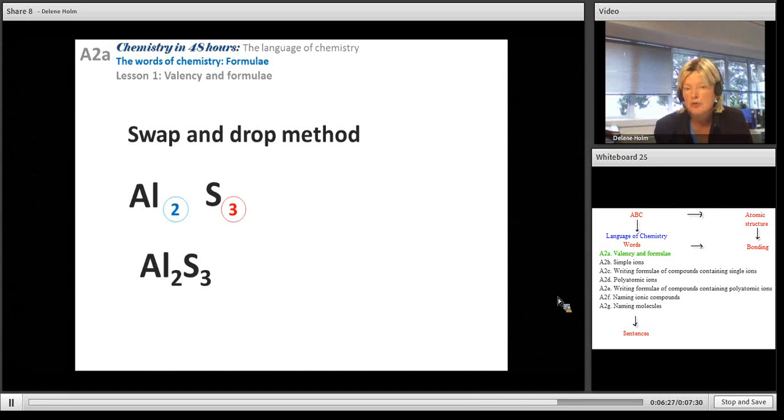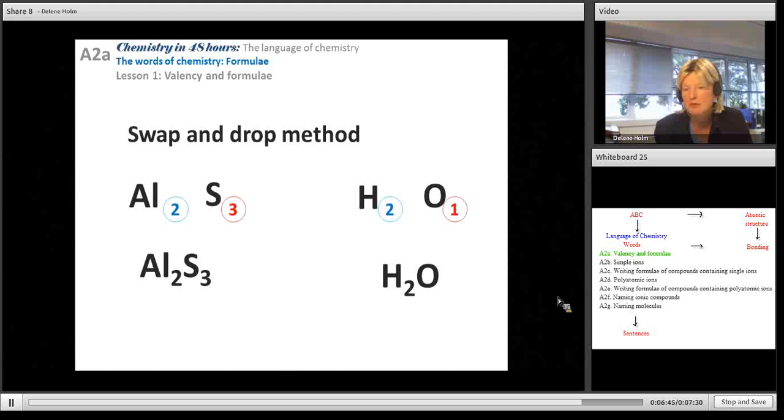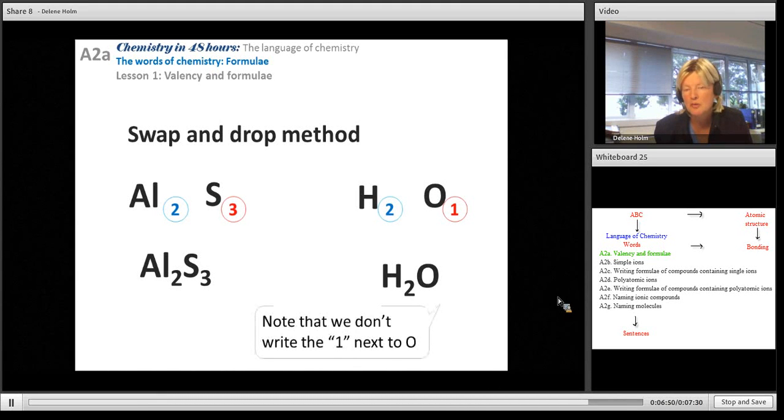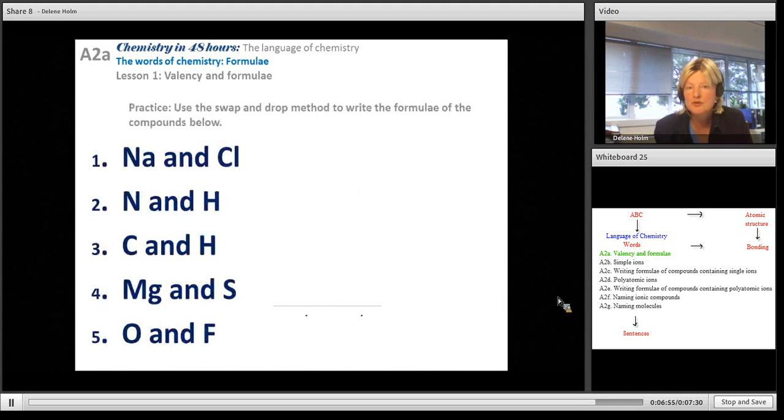If I had water, the valency for hydrogen is 1 because it's in Group 1. Oxygen is in Group 16, so there's a valency of 2. Swap them across. I'm going to need 1 oxygen for every 2 hydrogens, giving me a formula of H2O. And of course we never write the ones. Here's some more practice. Use the swap and drop method to write the formulae. Here are the answers and I hope you managed to work them out.